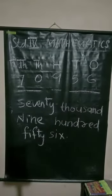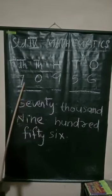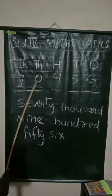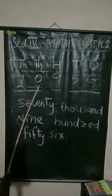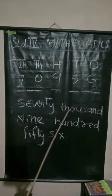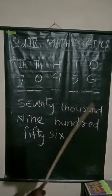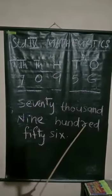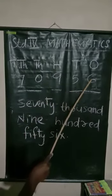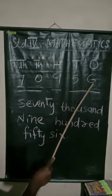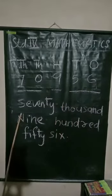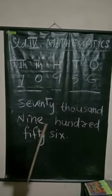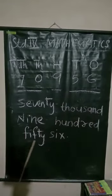Here we have another number. Thousands and ten-thousands make the number seventy. How many thousands are there? Seventy thousand. How many hundreds are there? Nine hundred. Tens and ones make the number fifty-six. So we have the number seventy thousand nine hundred fifty-six.